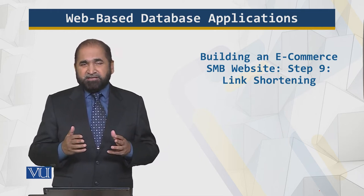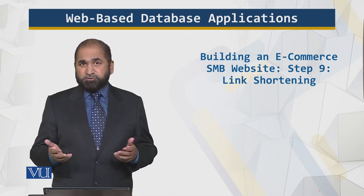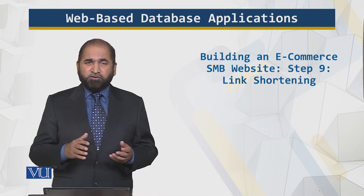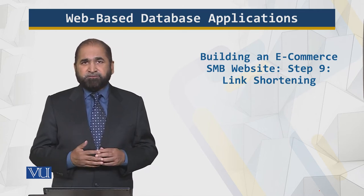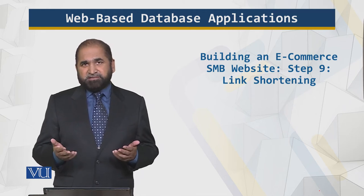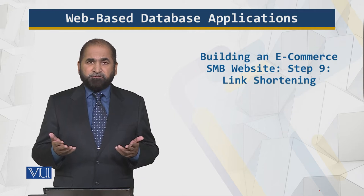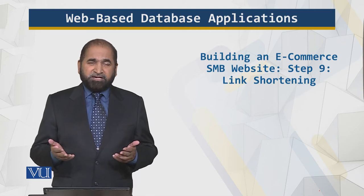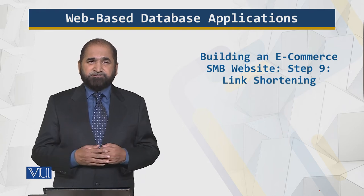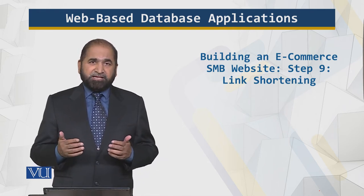Now, that text length creates problems in certain older systems. It used to truncate or move the text. So that creates problems. Now with the advent of Twitter, which has a certain limit of characters — about 140 — that becomes a problem. You cannot put long links in your Twitter message; it will not allow. So we need the link shortener.